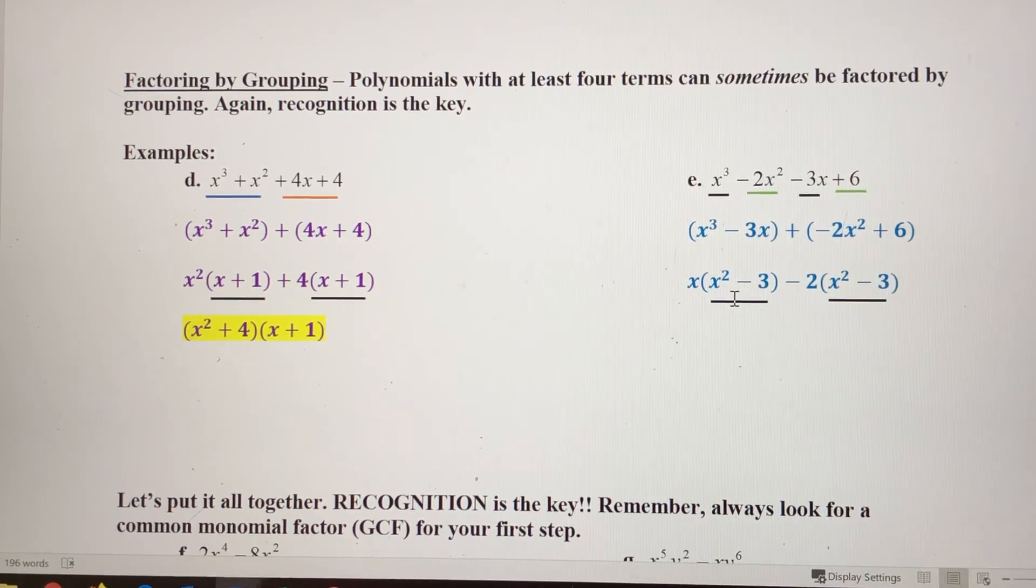Remember, you always want to make sure these binomials are exactly the same. So once I put these together, my answer is going to be x minus 2. So x minus 2 times this binomial, x squared minus 3.